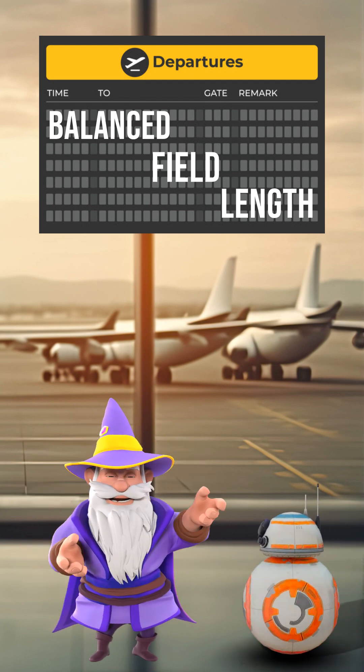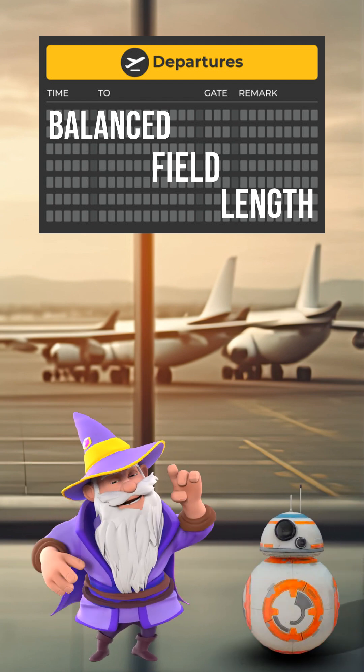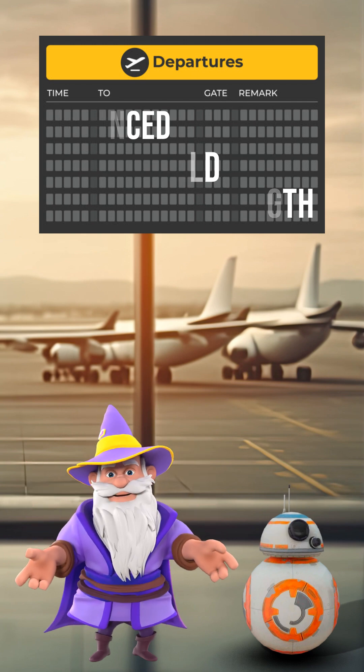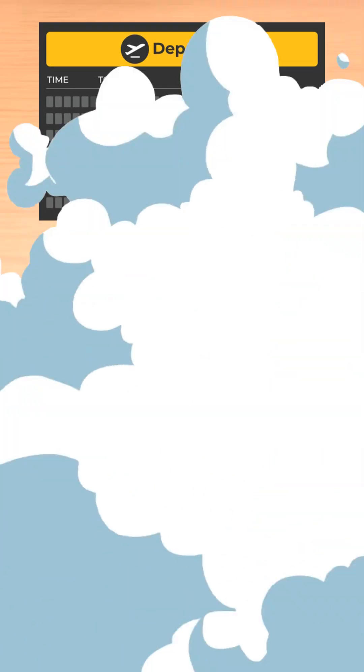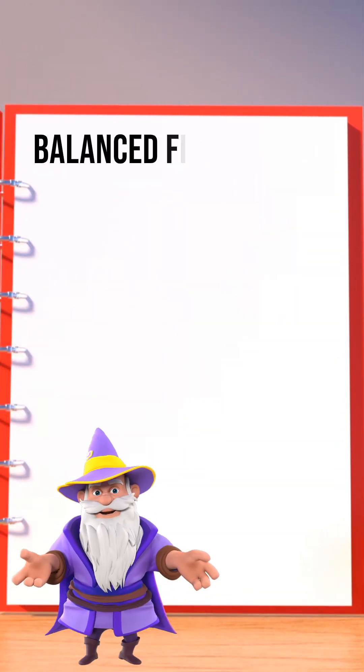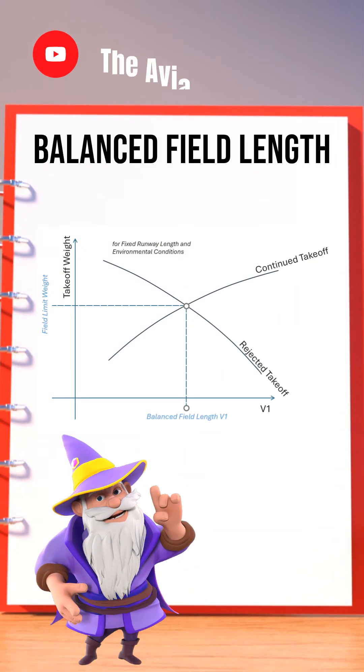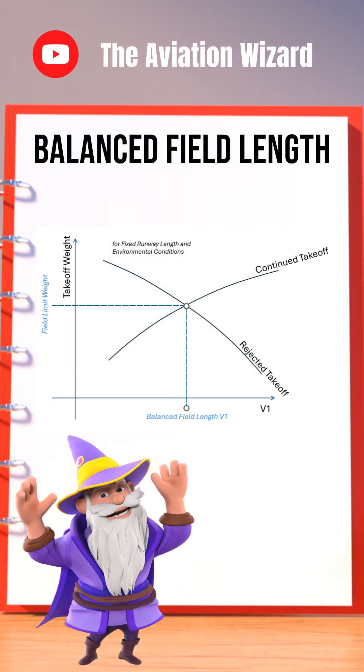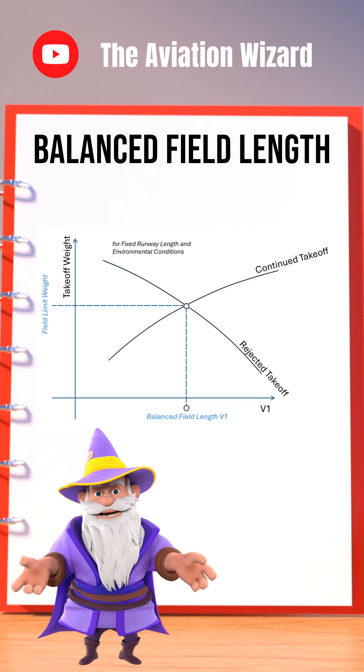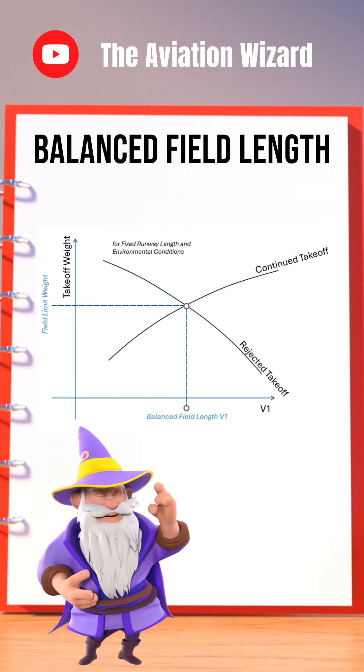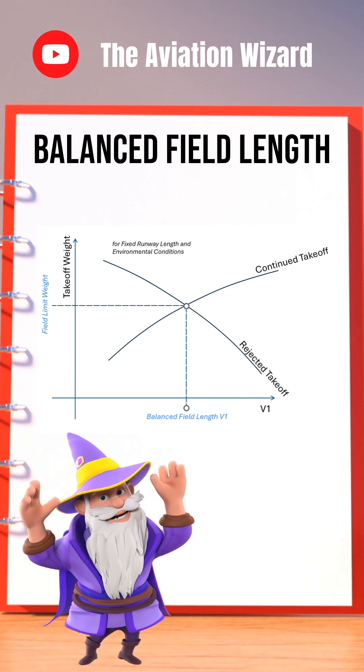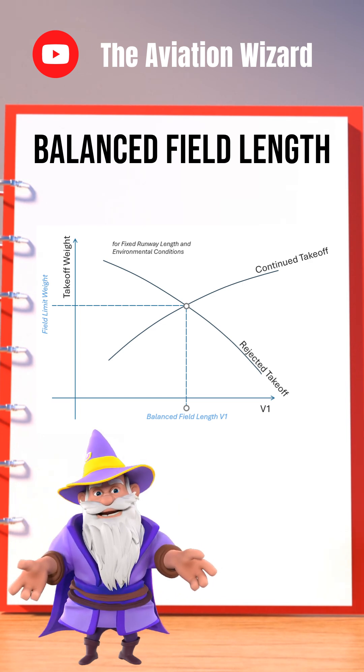It's not just theory, it determines your V1 and can save your life in a rejected takeoff. The balanced field length is the runway length at which the distance required to continue the takeoff after an engine failure at V1 equals the distance required to abort and stop safely.